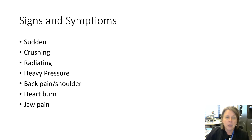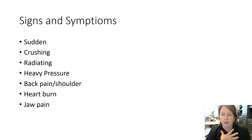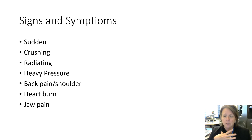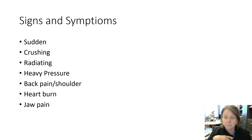Signs and symptoms of myocardial infarction include sudden, crushing, radiating, heavy pressure chest pain. Many describe it as an elephant sitting on their chest or a truck on them. Classic presentation includes chest pain radiating down the left arm. There can also be deferred pain radiating down both arms, back pain, shoulder pain, heartburn that won't go away, and jaw pain.